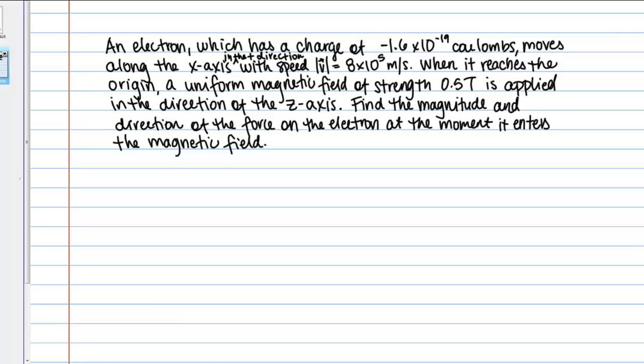Find the magnitude and direction of the force on the electron at the moment it enters the magnetic field. What we have here is a particle with a charge, our electron in this case, and it has a certain charge that we know. It's moving with a certain velocity and it encounters a magnetic field, which is given by a vector.